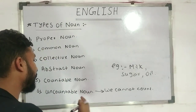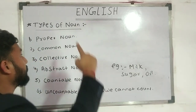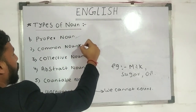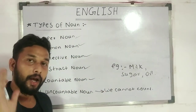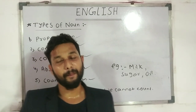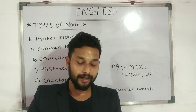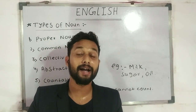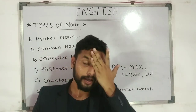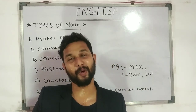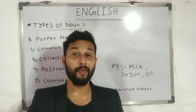So I hope you now understand what an uncountable noun is. The types of nouns are: proper, common, collective, abstract, countable, and uncountable. A total of 6 types of nouns were covered today. In the next lectures, we will discuss types of adjectives, verbs, and pronouns. Today's English lecture ends here.